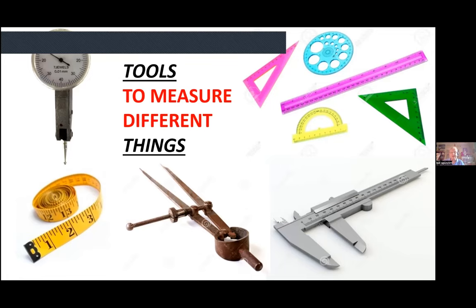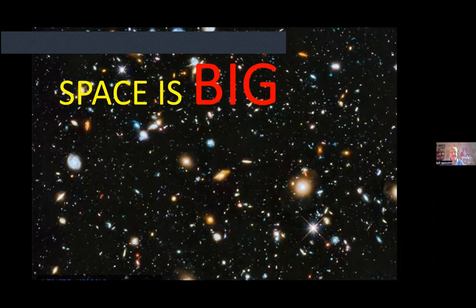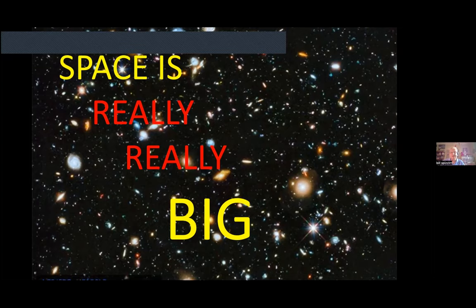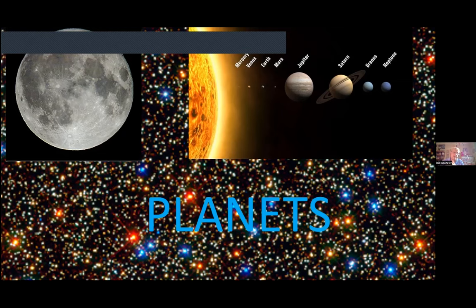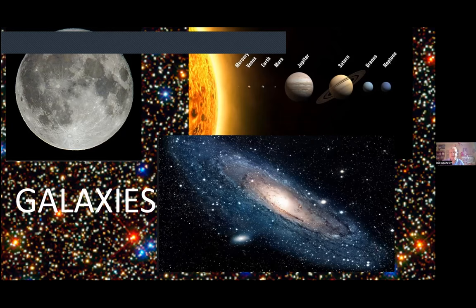Tonight you'll learn that you have to use different kinds of tools to measure different things. The same rule applies to the cosmos — and space is big. As they said in that movie, space is really, really big. Consequently, we end up having to use many different tools to measure it. Not only is space really big, but there are all kinds of different things to measure: stars, moons, objects in our solar system, all the planets, and galaxies.